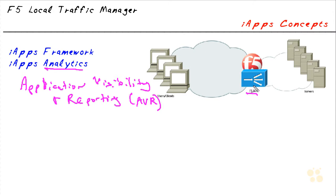AVR gives me the ability to analyze an application's performance in depth — web apps and other things. Not just HTML, but things concerning my servers themselves: transactions per second, bandwidth throughput, latency, number of sessions, and all sorts of stats like that. Whether I can spread things out between virtual servers, pools, and applications — all of this can be viewed on a per-app basis.